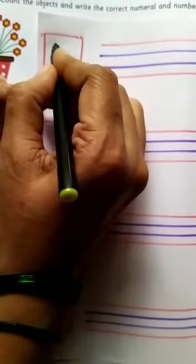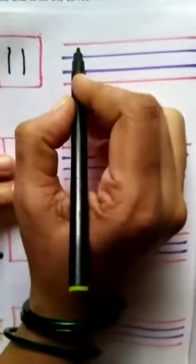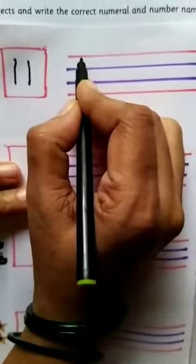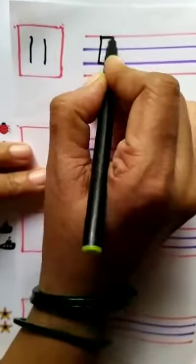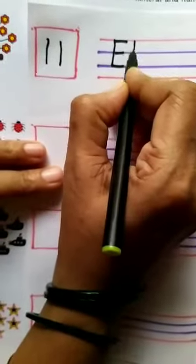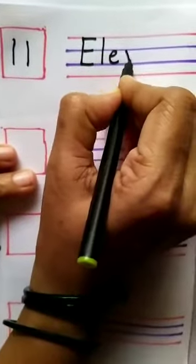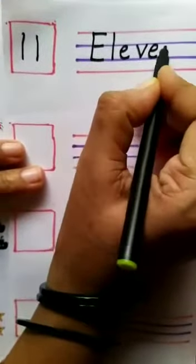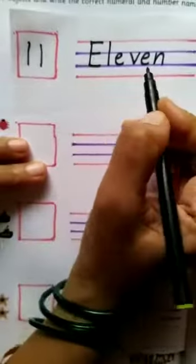Here we will write number 11 and here we will write the spelling or number name of 11: E, L, E, V, E, N. 11.